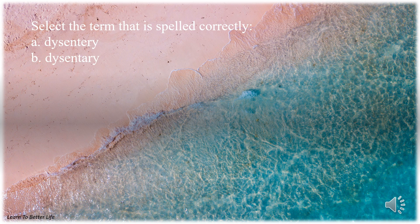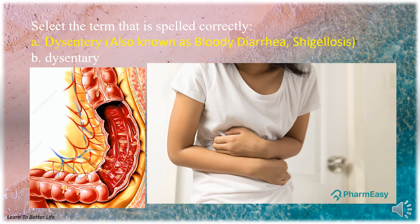Select the term that is spelled correctly. A. Dysentery with E. B. Dysentery with E. The answer is A. Dysentery with E, also known as bloody diarrhea.